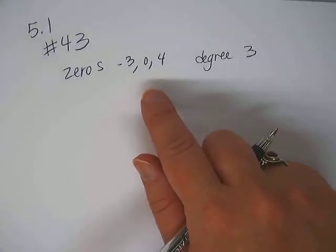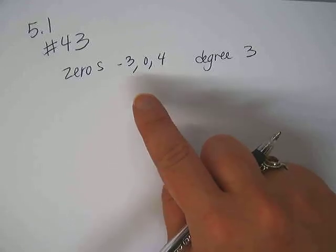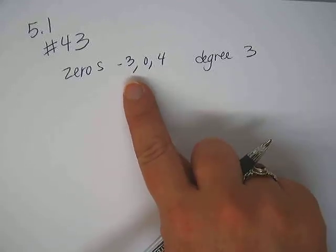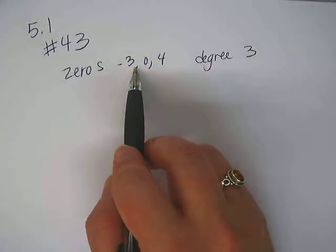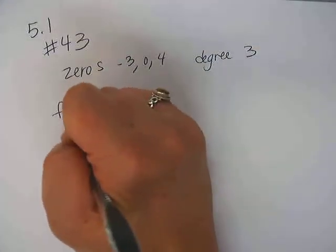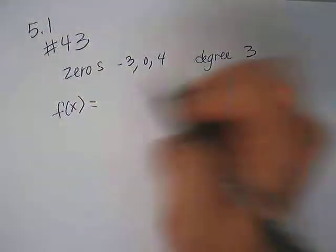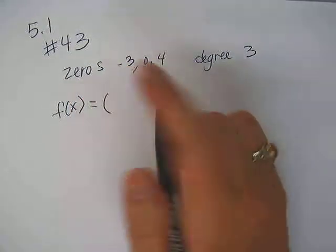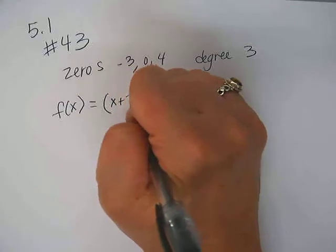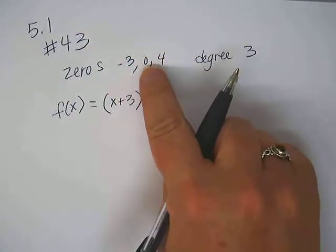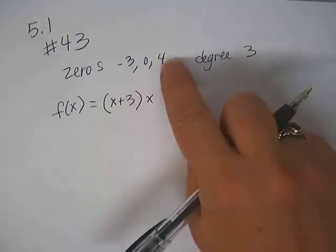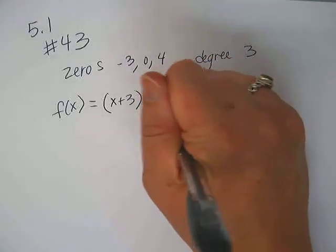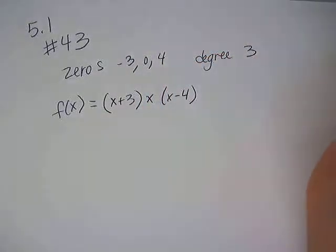Some of them might be imaginary, but we're not going to talk about that until section 5.6. Okay, so in order to turn our zeros into factors and create a function, we take the negative 3 and turn it into a factor, x plus 3. And we take the zero and turn it into a factor, x. And we take the 4 and turn that into a factor, x minus 4.